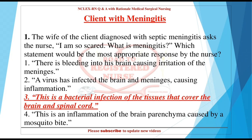Question 1: The wife of the client diagnosed with septic meningitis asks the nurse, 'I am so scared. What is meningitis?' Which statement would be the most appropriate response by the nurse? 1. There is bleeding into his brain causing irritation of the meninges. 2. A virus has infected the brain and meninges, causing inflammation. 3. This is a bacterial infection of the tissues that cover the brain and spinal cord. 4. This is an inflammation of the brain parenchyma caused by a mosquito bite.